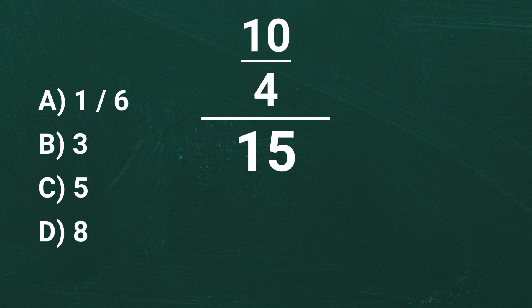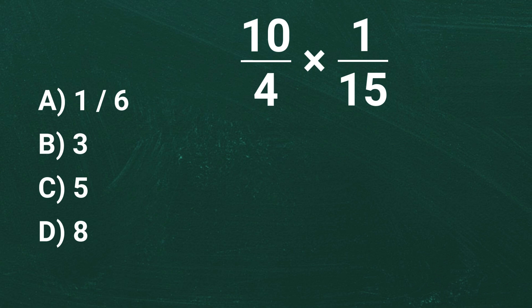That just means flipping the number upside down. So instead of dividing by 15, we will multiply by 1 over 15. But before we do that, let's simplify 10 over 4 first.